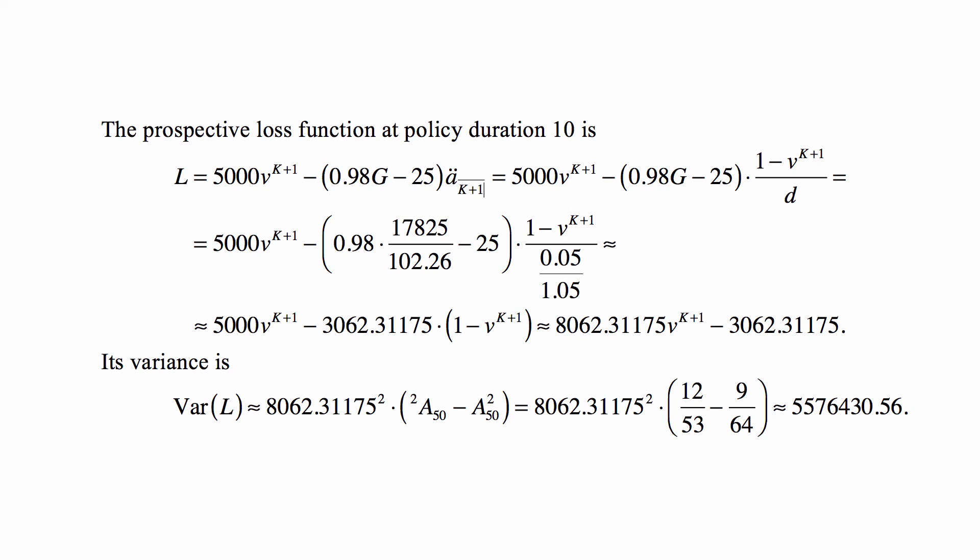An important observation is that because the probability of dying is the same at any age, those two parameters are the same at age 50 as they are at age 40 calculated before. It doesn't matter how old this person is. With this probability distribution, the parameters of life insurance are the same, because a geometric distribution of the curtate future lifespan is essentially the same thing as constant force assumption for the continuous model. Although constant force implies geometric distribution, but not the other way around. Nevertheless, at this point, we know that the variance can be calculated this way. And we get 5,576,430.56.